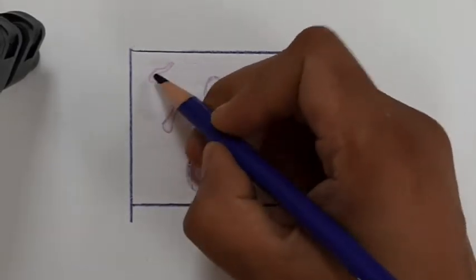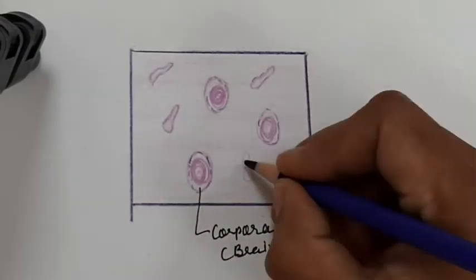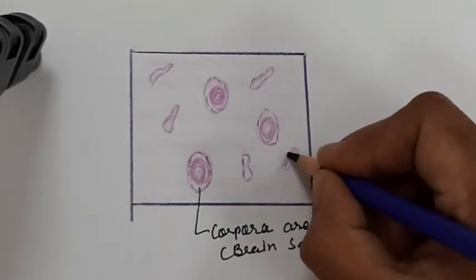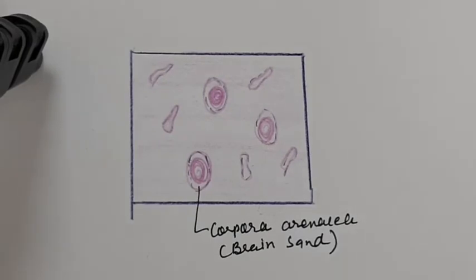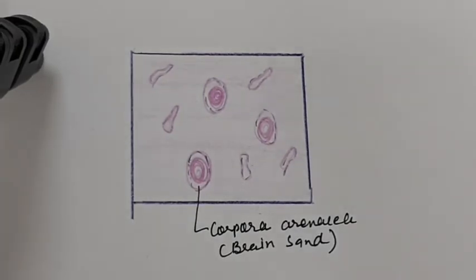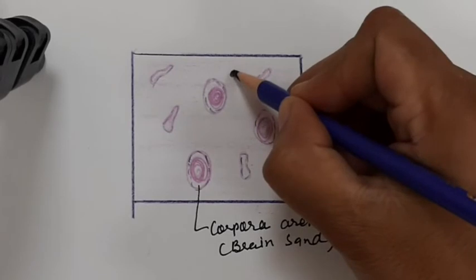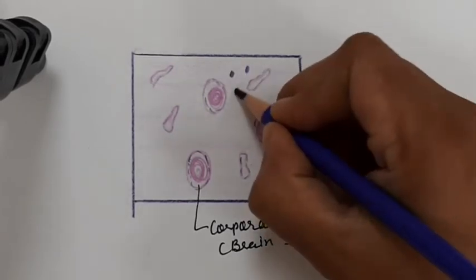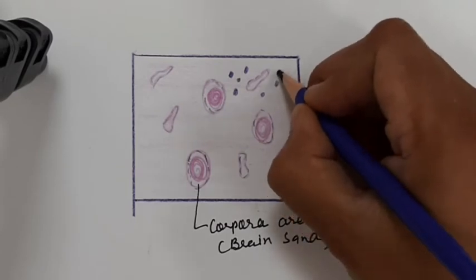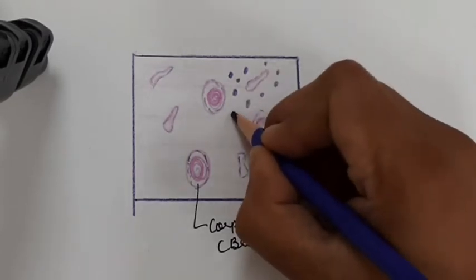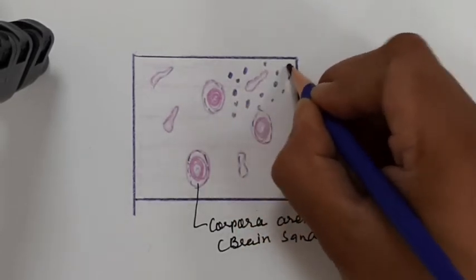Hence its name, the pineal gland. It is covered by the pia mater, and from the pia mater, septa extend into the gland and divide it into small irregular cords. Two types of cells are present.